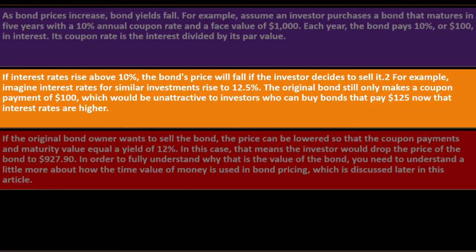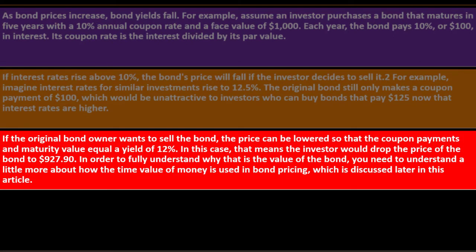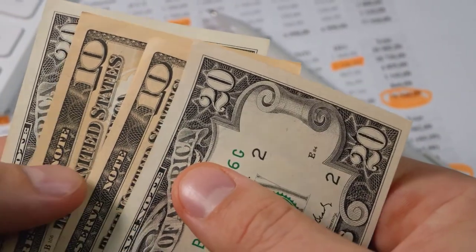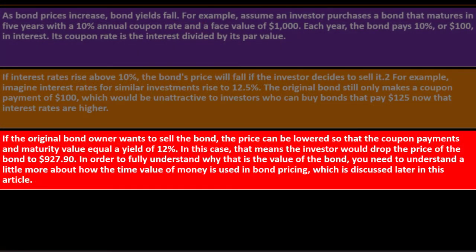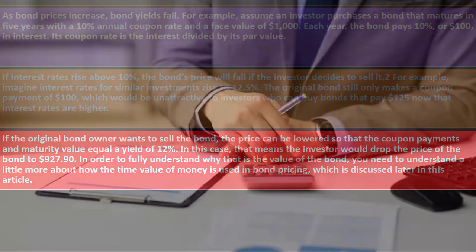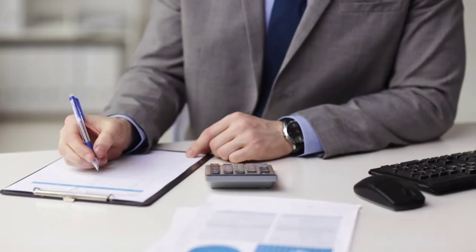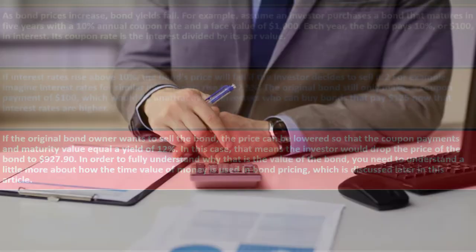If you want to sell a bond paying $100 when others pay $125, you have to lower the price. If the original bond owner wants to sell, the price can be lowered so that the coupon payments and maturity value equal a yield of 12.5%. In this case, the investor would drop the price of the bond to $927.90 — a calculation that uses time value of money.